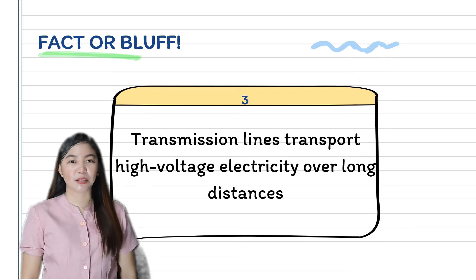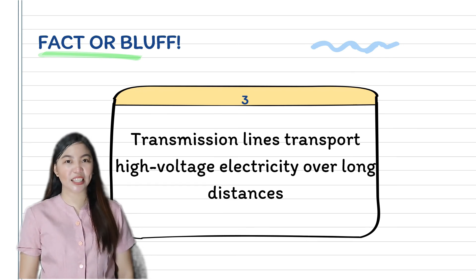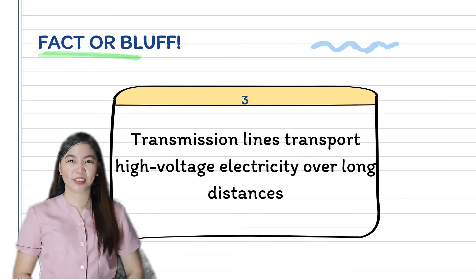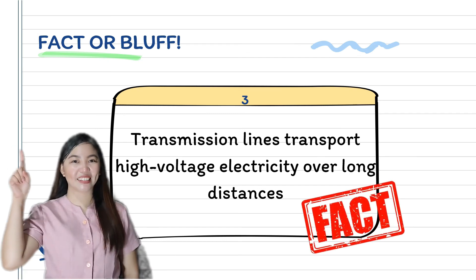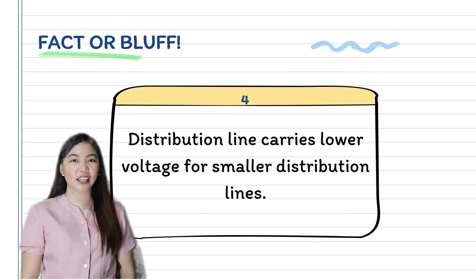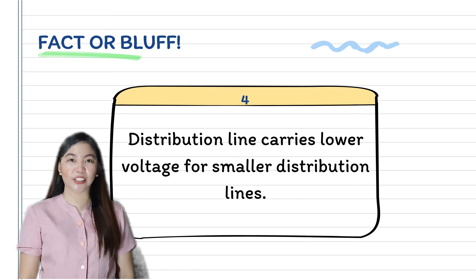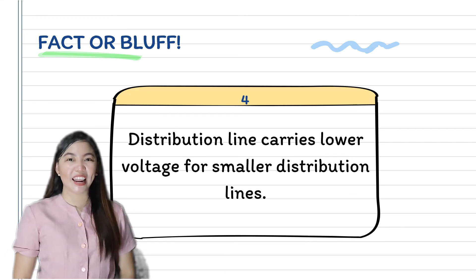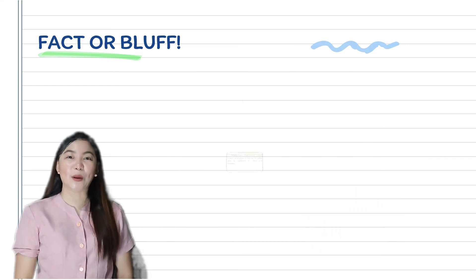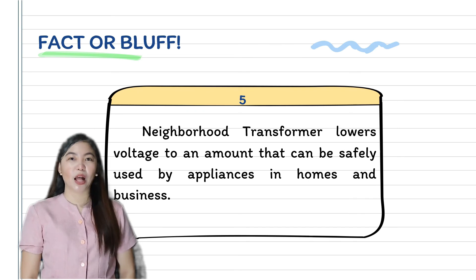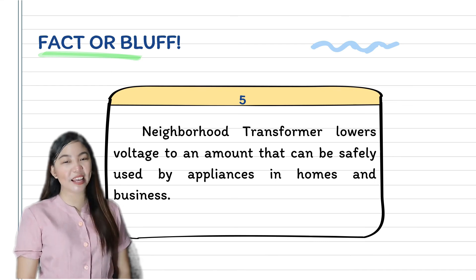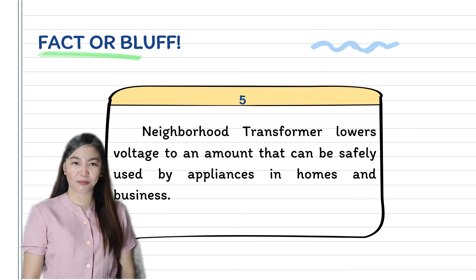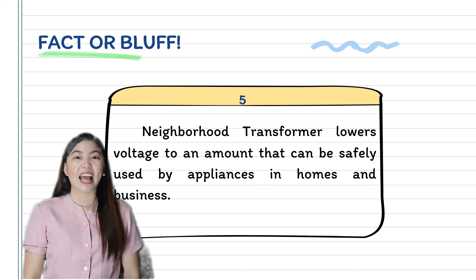Number three: transmission lines transport high voltage electricity over long distances — fact or bluff? Very good, it's a fact. Fourth: distribution lines carry lower voltage from smaller distribution lines — fact or bluff? Very good, it's a fact. Number five: neighborhood transformer lowers voltage to an amount that can be safely used by appliances in homes and businesses — fact or bluff? Very good, it's a fact. You've got a perfect score!